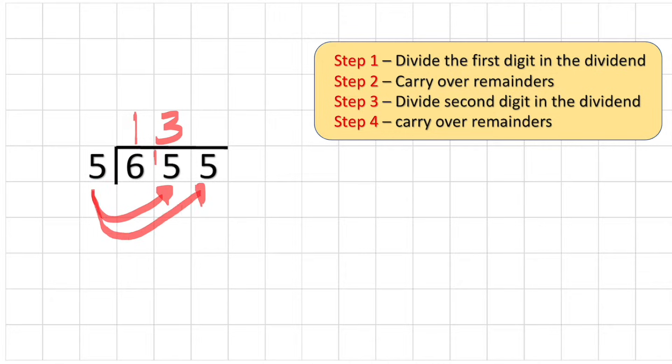So now I can do my last digit. How many fives are there in five? There are one. So my answer to 655 divided by five equals 131. Awesome, a little bit harder because of this remainder that we had to carry over, but nothing too crazy yet.